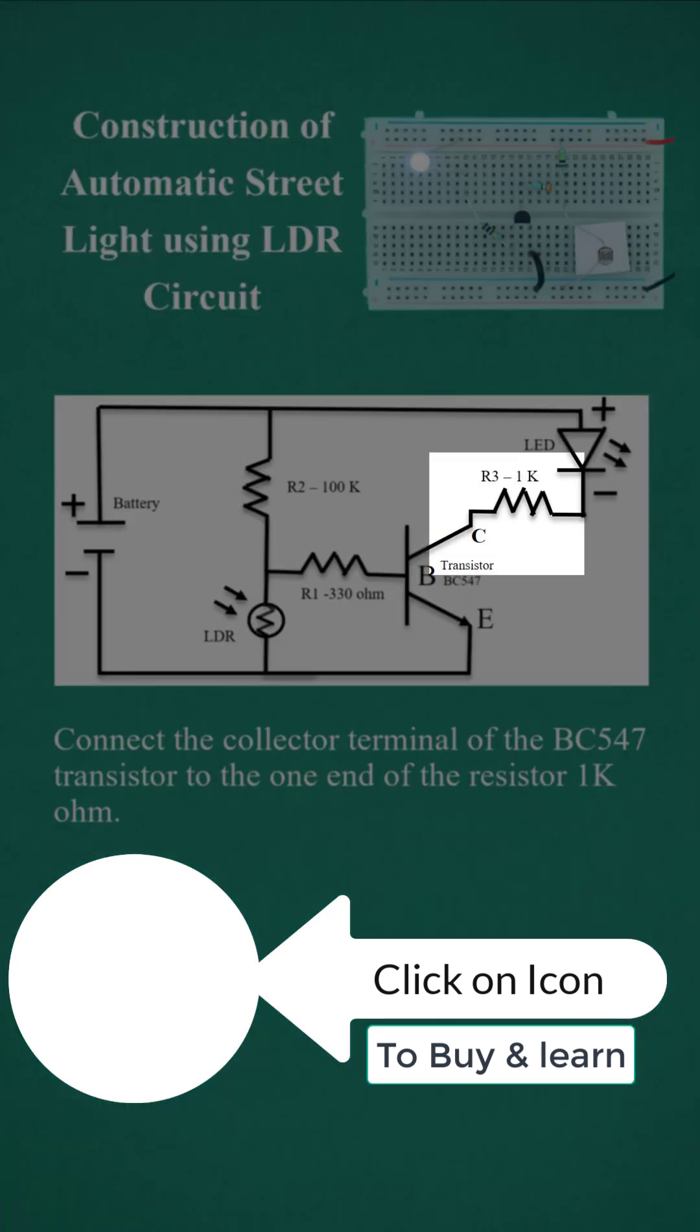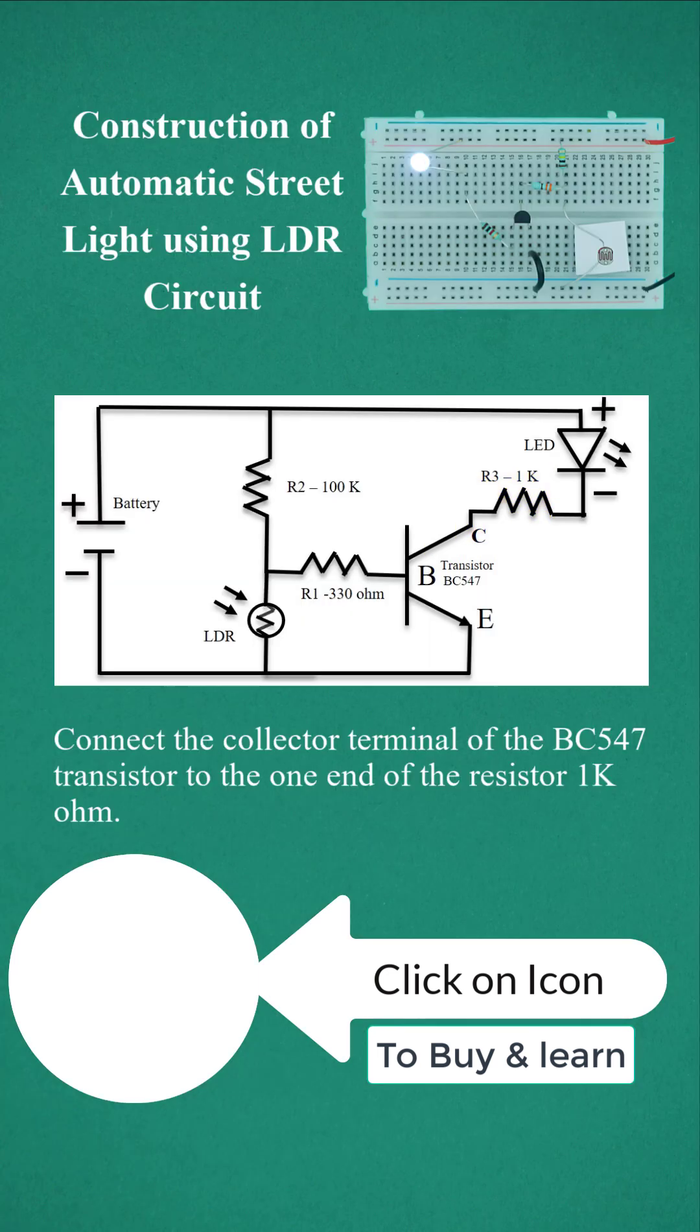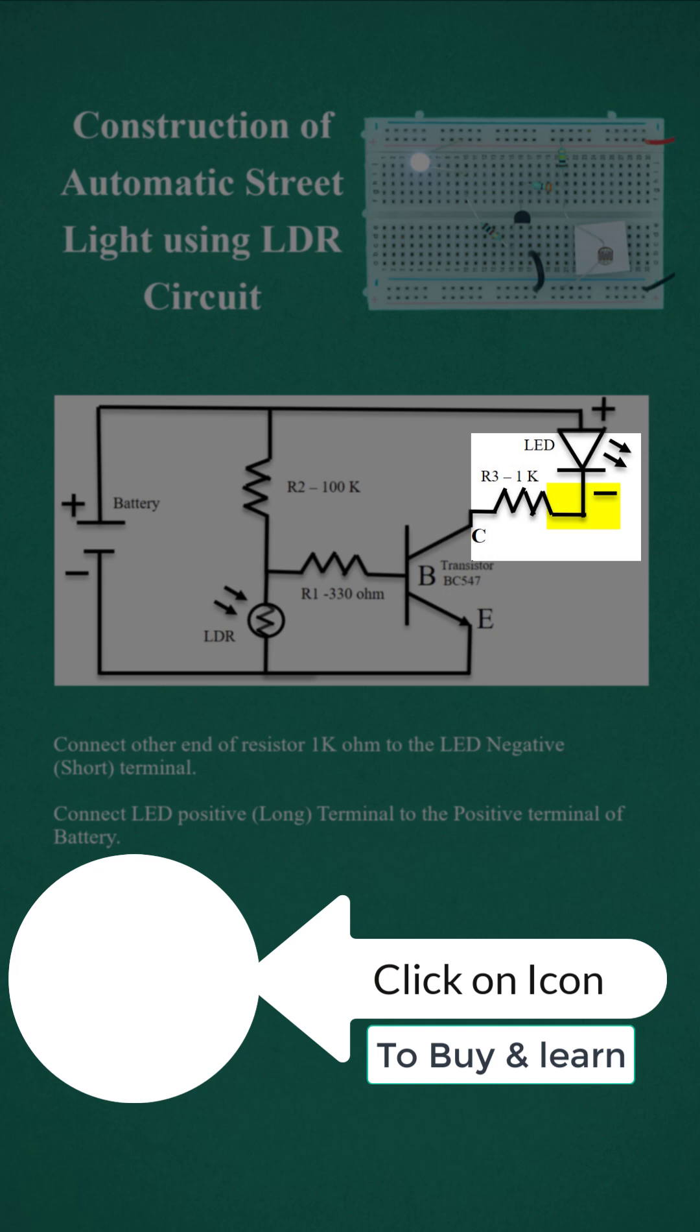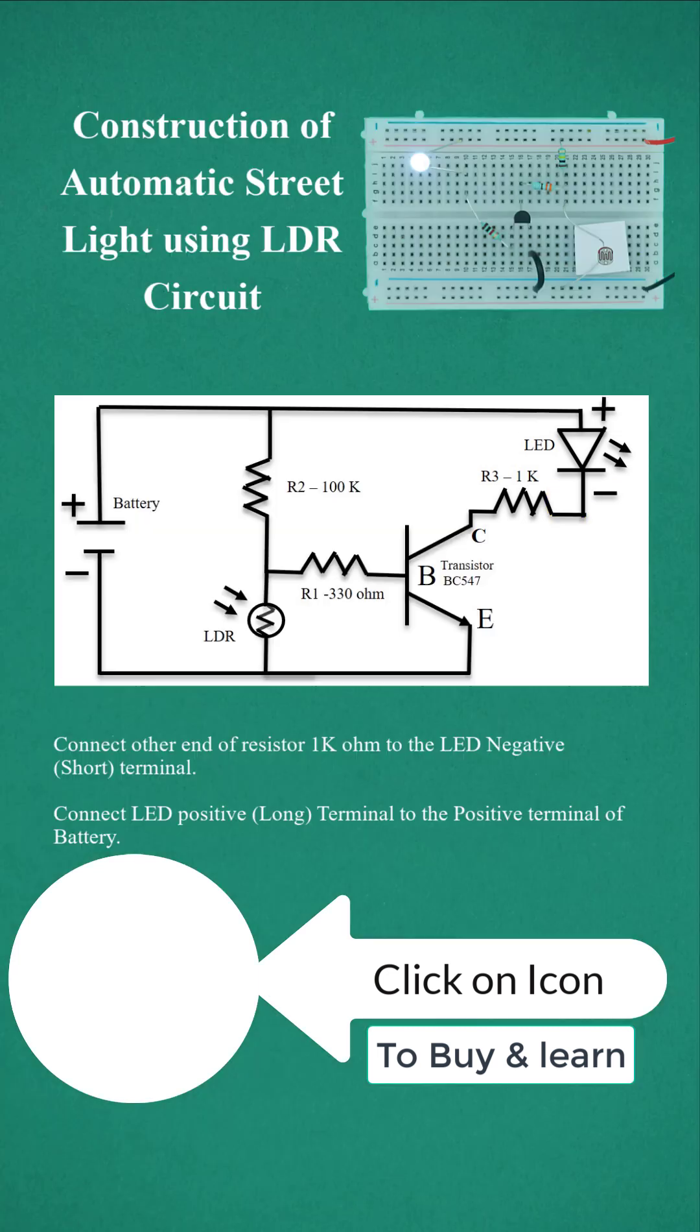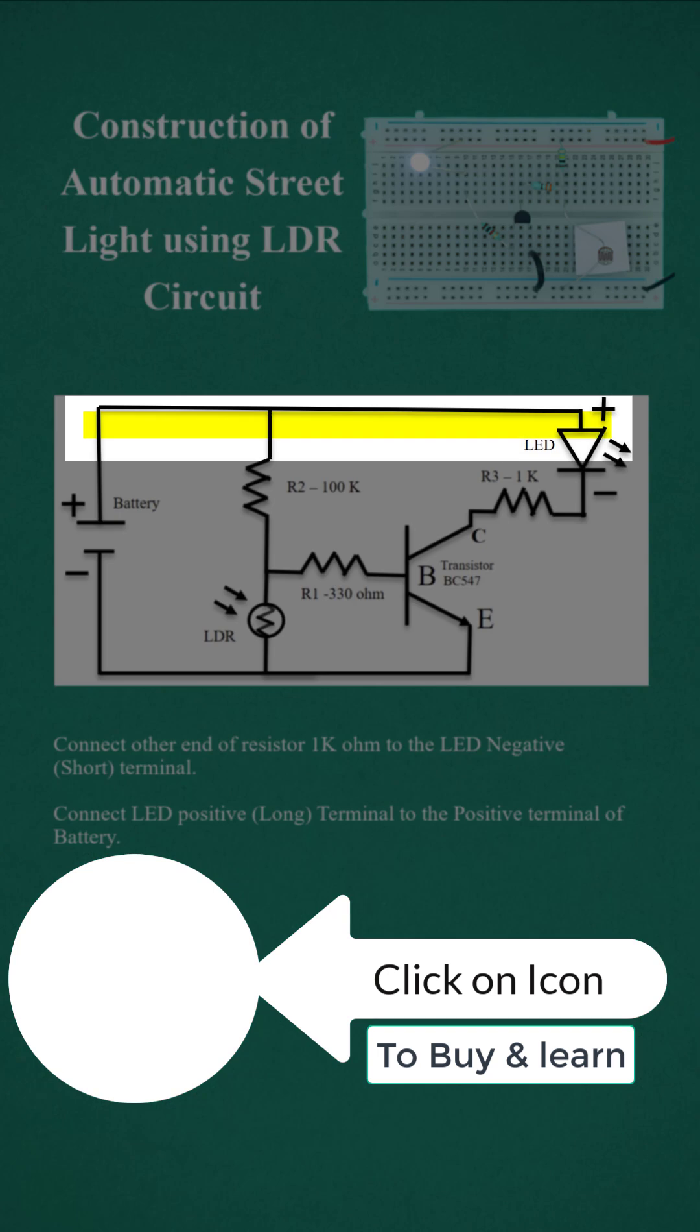Connect the collector terminal of the BC547 transistor to one end of the 1 kilohm resistor. Connect the other end of the resistor to the LED negative terminal. Connect the LED positive terminal to the positive terminal of the battery.